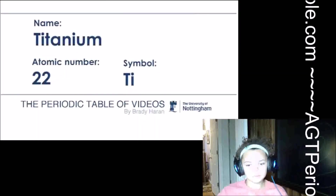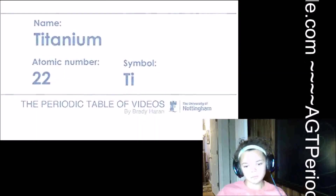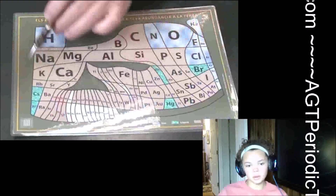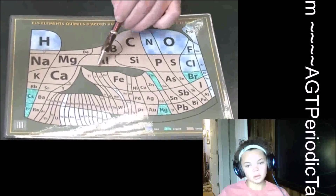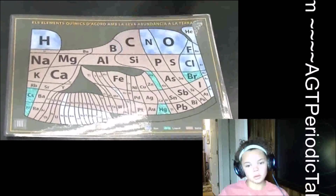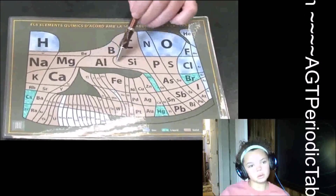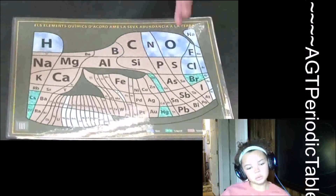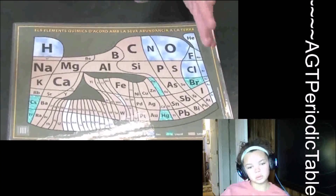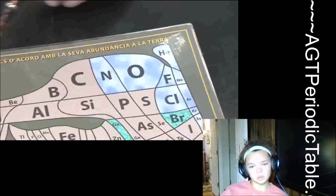Titanium is a very interesting element, and it's interesting because it's very abundant on the planet. It's not the most abundant metal, but it's still pretty abundant. This is a periodic table where the area of each of the elements represents the relative amount of that material found on the earth.